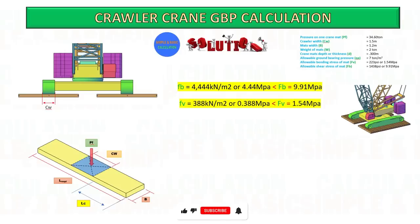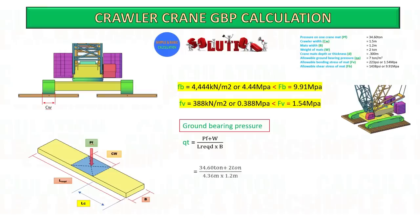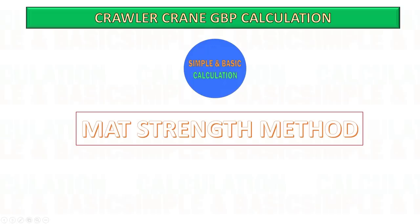Now you can calculate the ground bearing pressure on the ground. In our next method we will do the mat strength calculation based on the assumed length of the mat. This allows us to reduce the ground bearing pressure on the ground. Usually we already have a standard size of mats available on site, and we can start to calculate the effectiveness of these mats.